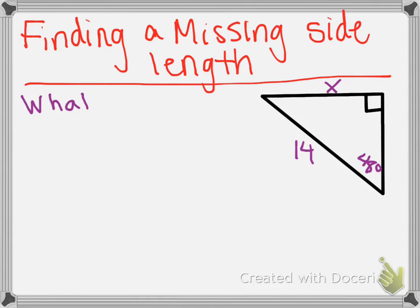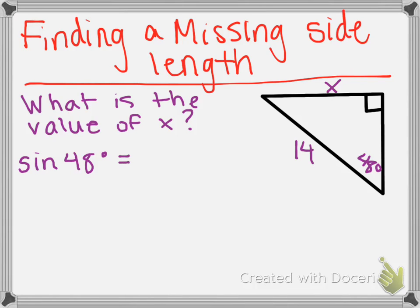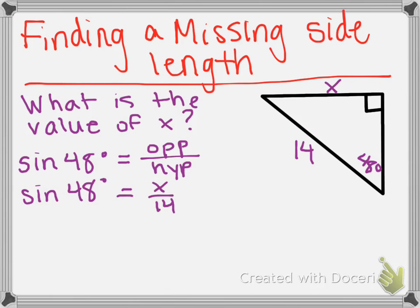We are going to look at this triangle where we know side x and the hypotenuse is 14, and we know that one of the angles is 48 degrees. We want to find the length of x. Since we know that x is opposite of 48 degrees, we know that the sine of 48 degrees is going to be equal to x over 14, because that is the definition of sine. So we are going to set sine of 48 degrees equal to opposite over hypotenuse, which is x over 14.